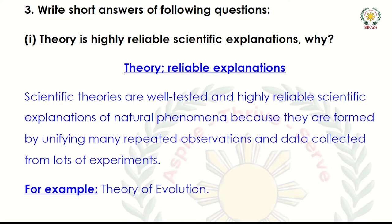For example, the theory of evolution. The theories are reliable because they are supported and proven by many observations — many repeated observations observed under different conditions and from different kinds of experiments, so that data is gathered.